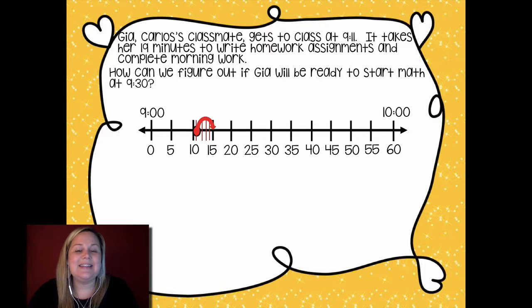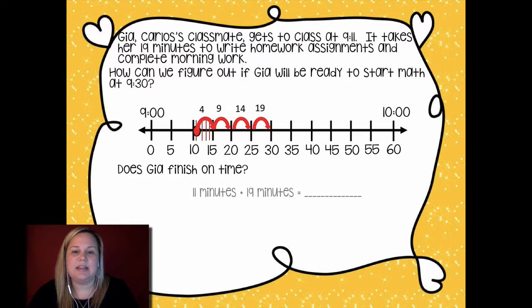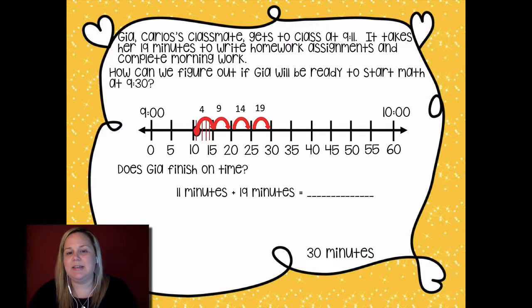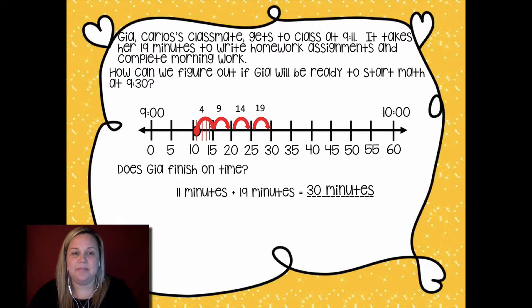We have four plus that five jump is nine, plus five more is 14, plus five more gives me 19. So she has just enough minutes to be able to get there on time. So 11 minutes plus 19 minutes gives me that 30 minutes to get to that 9:30.